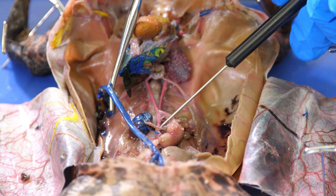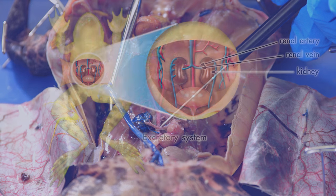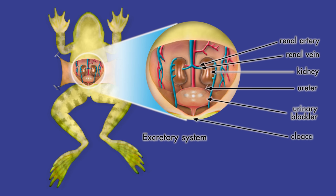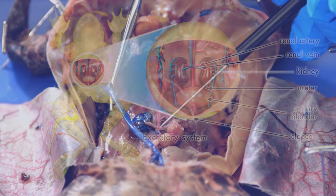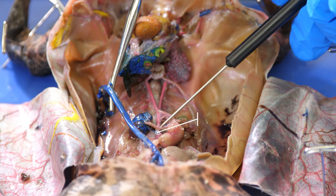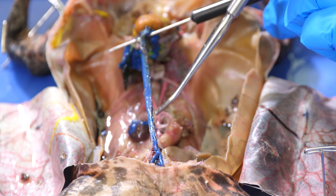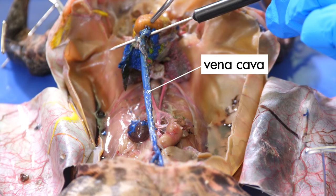The liquid waste filtered out of the frog's blood by the kidneys is excreted as urine. From the kidneys, urine travels down two tubes called ureters. The ureters empty urine into the urinary bladder, which excretes urine through the cloaca. Once the blood is filtered, it is carried by renal veins back to the bloodstream. Blood returns to the frog's heart through a main vein called the vena cava.